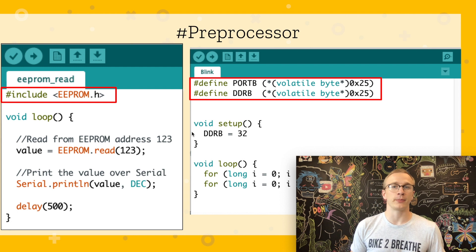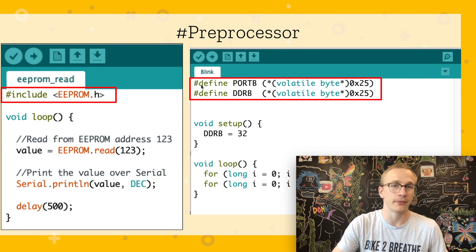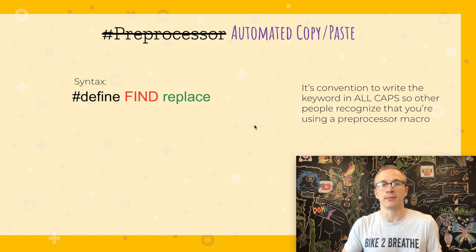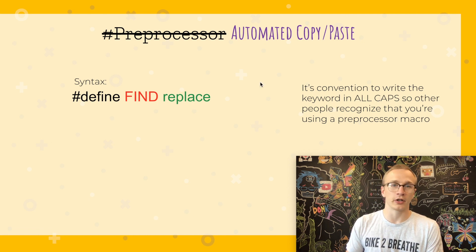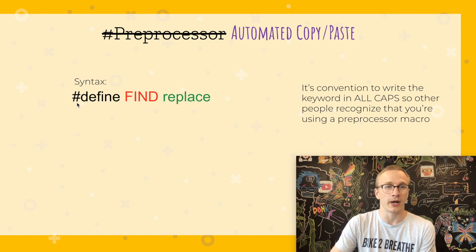Let's learn about the preprocessor. The preprocessor is anything that starts with the octothorpe, hash, or pound symbol followed by something like define or include. In a simple sense, the preprocessor is just an automated copy-paste machine. The first thing we're going to look at is a define statement — a define is literally just a copy and replace. We do the pound sign, define, then the keyword we want to find, and after that what we want to replace it with.